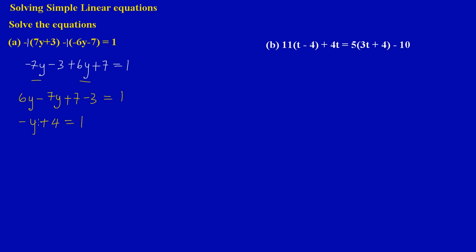We have a negative y here, so I'll take the numbers to one side and leave the variable on the other side. Since 4 is being added to negative y, I do the opposite — I subtract 4 from both sides: negative y plus 4 minus 4 equals 1 minus 4. The positive 4 and negative 4 cancel out, leaving negative y equals negative 3.